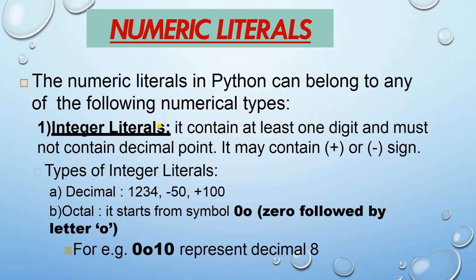Next is numeric literals. In numeric literals, there are types. The first is integer literal — integers contain at least one digit and must not contain a decimal point; they contain natural numbers only. Types of integers include: decimal (range 0-9), and octal which starts with the symbol '0o'. Octal has a range of 0 to 7 and a base of 8, representing decimal 8.